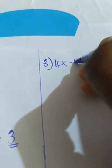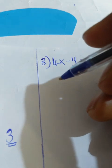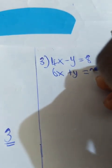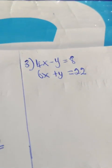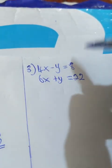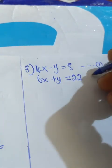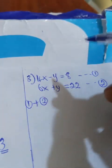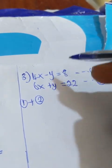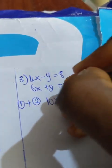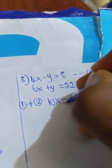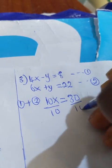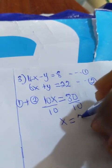The third example: 4x minus y equal to 8, and 6x plus y equal to 22. Taking this as equation one and this as equation two, we add the two equations to eliminate y. So 4x plus 6x is 10x; minus y plus y is 0; 8 plus 22 is 30. Dividing both sides by 10, x equals 3.